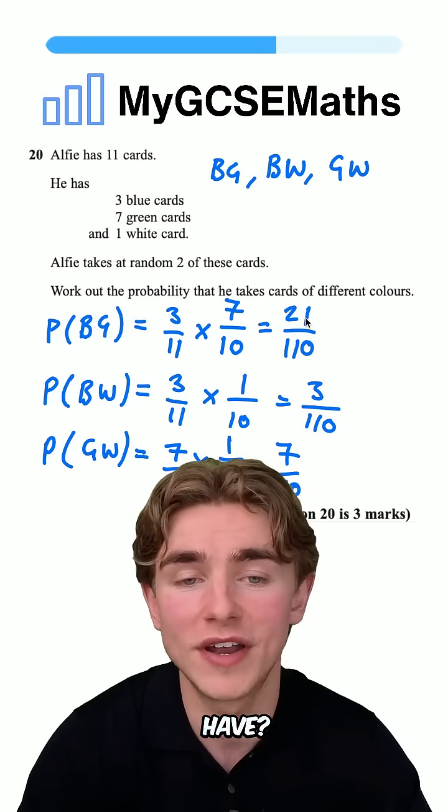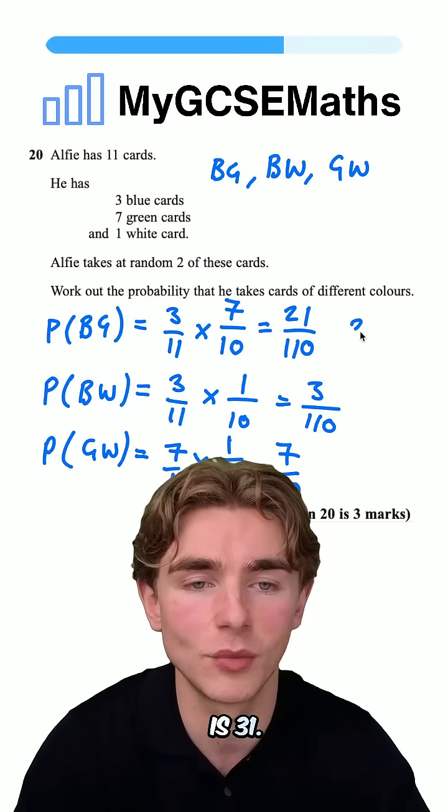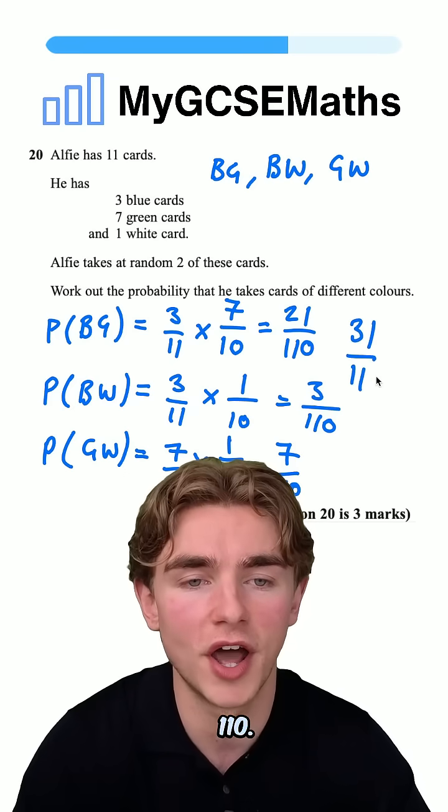Adding these together, what do we have? 21 plus 3 is 24, plus 7 is 31. So we have 31/110.